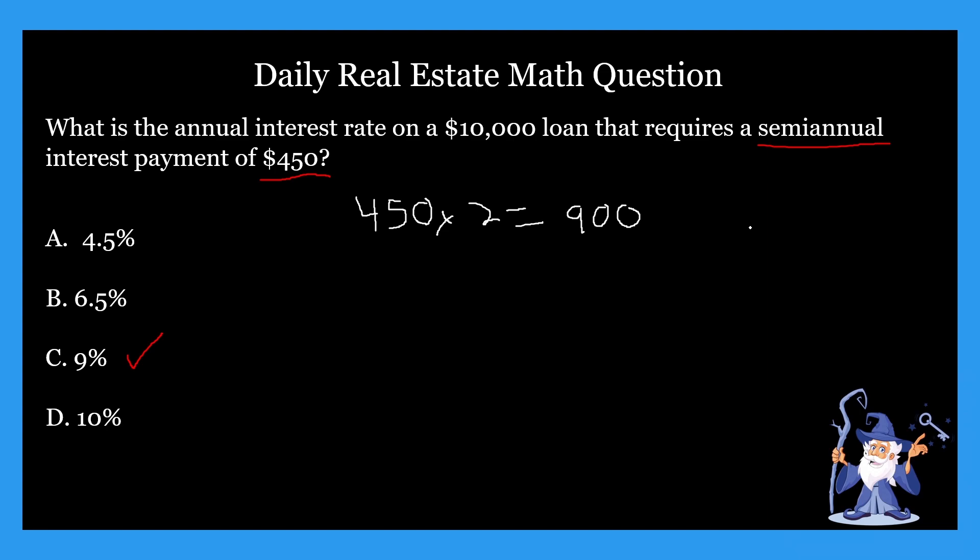I hope that makes sense. Now once we have this $900, that is our annual interest payment, which we could put into our formula, which we covered earlier this week, which was annual interest payment divided by the total loan. That will give us our annual interest rate. We're taking this $900 and dividing that by $10,000, and that is going to give us 9% or 0.09.